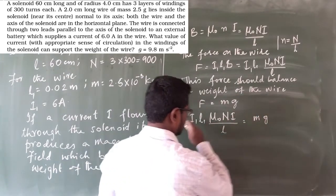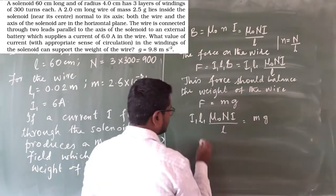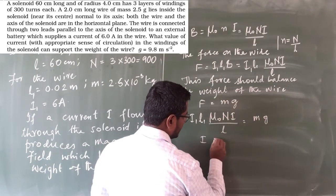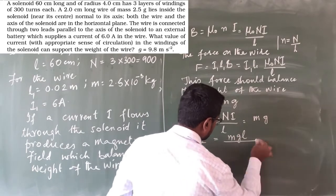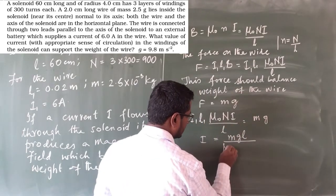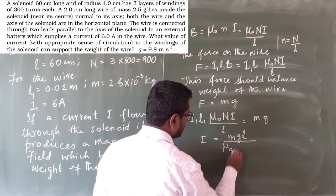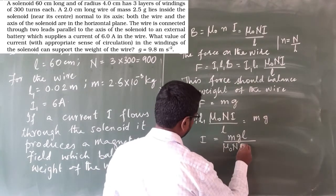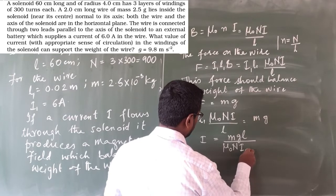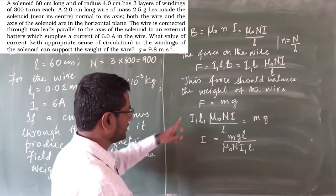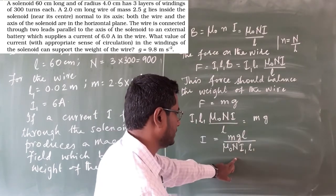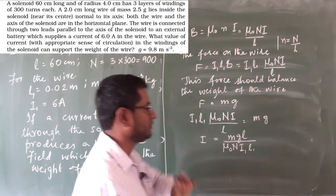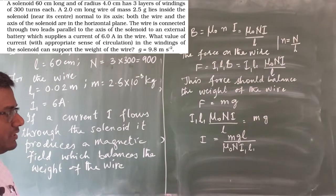Rearranging for the solenoid current I, we get: I equals MgL divided by (μ₀ × N × I₁ × L₁). The length L moves to the numerator, and μ₀, N, I₁, and L₁ all go into the denominator. This gives us the equation for the final answer.